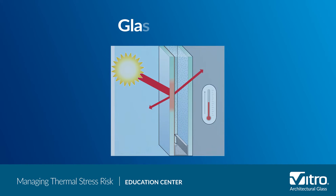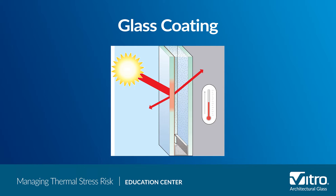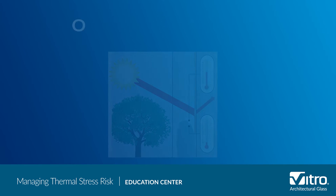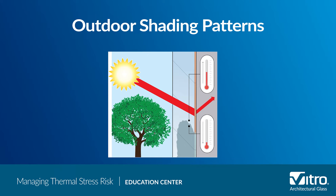Next is the type and location of the coating used. Both reflective and low-E coatings reflect and absorb solar radiation, but where these coatings are placed in an insulating glass unit, or IGU, can increase the amount of solar radiation absorbed and change the associated thermal stress risks.